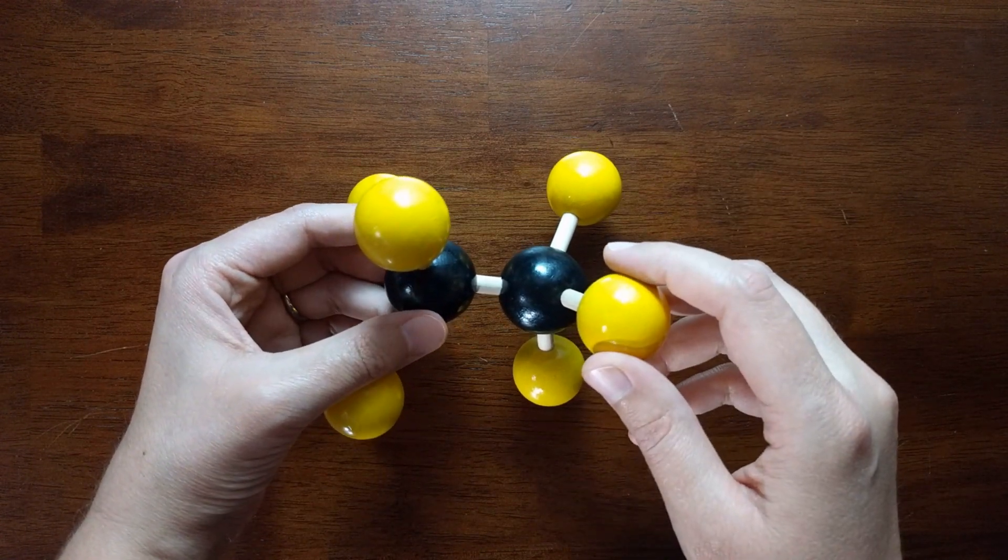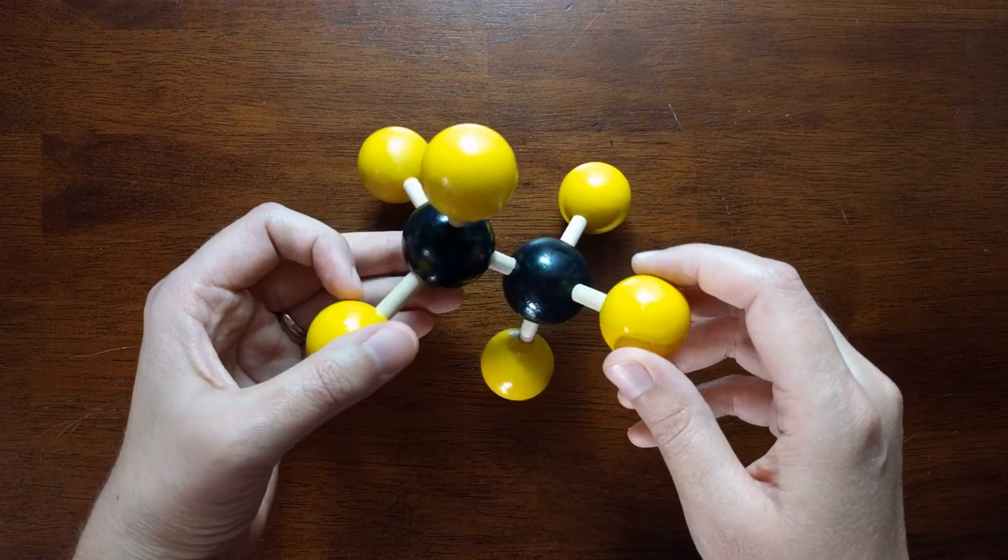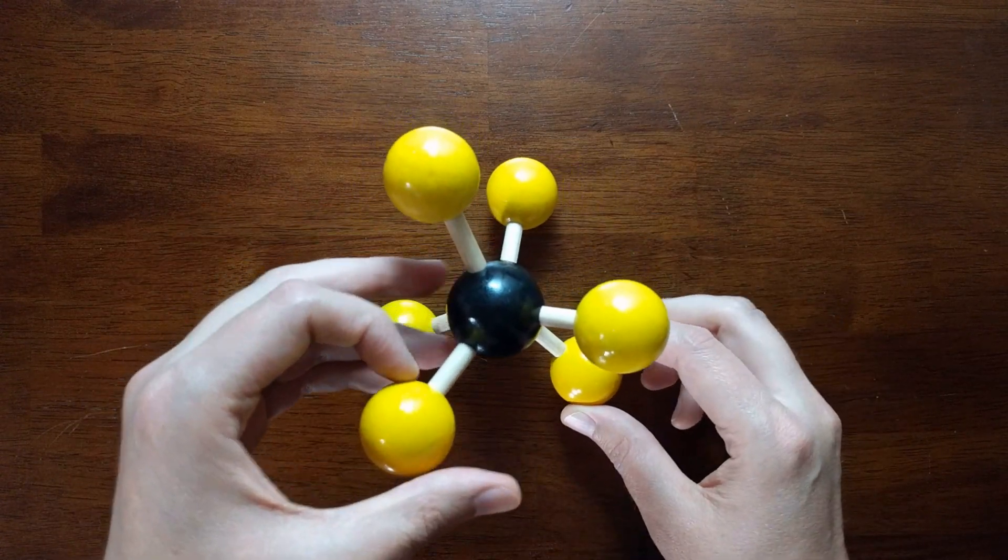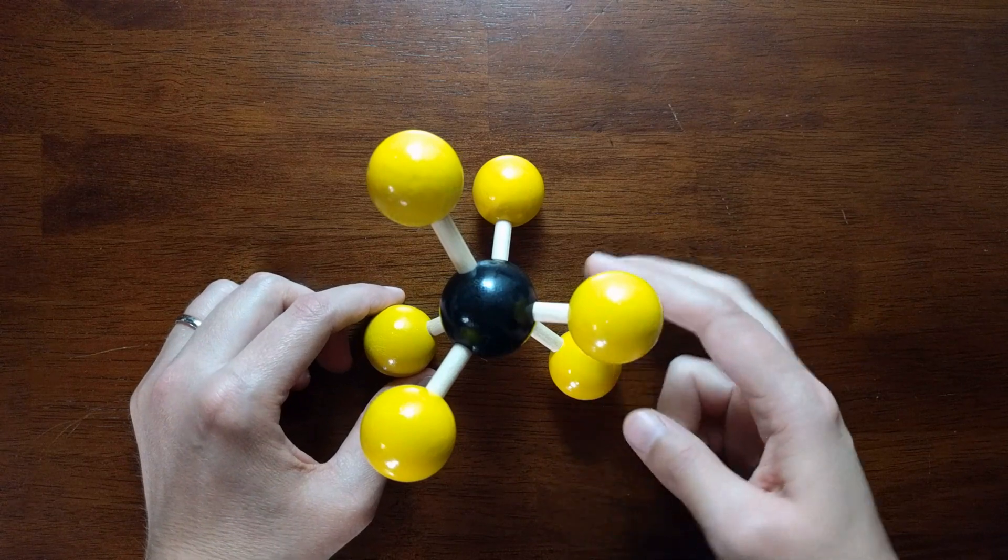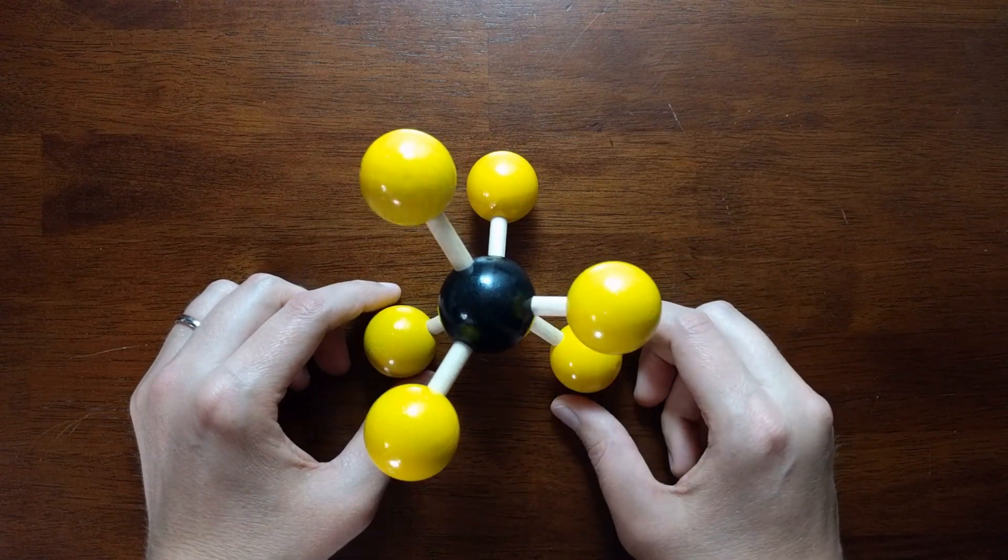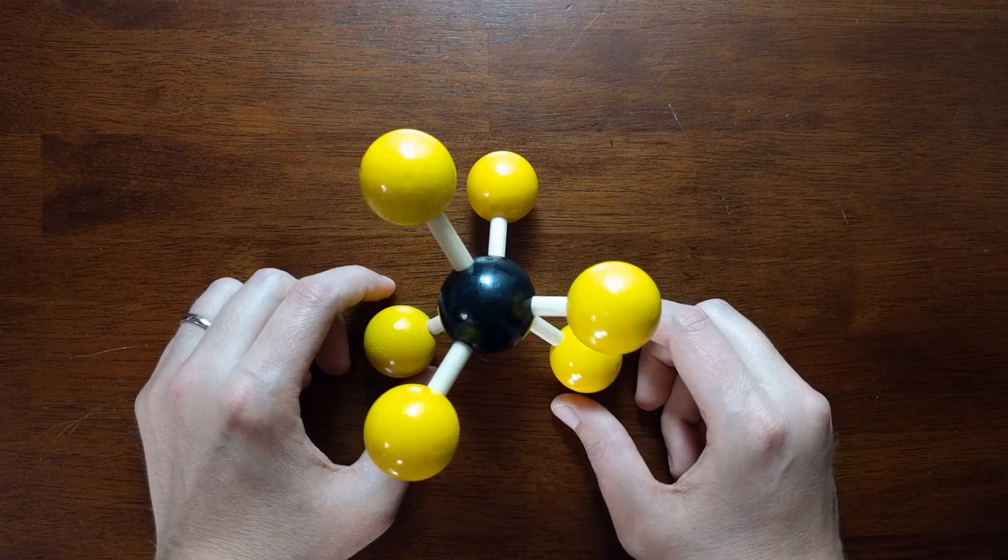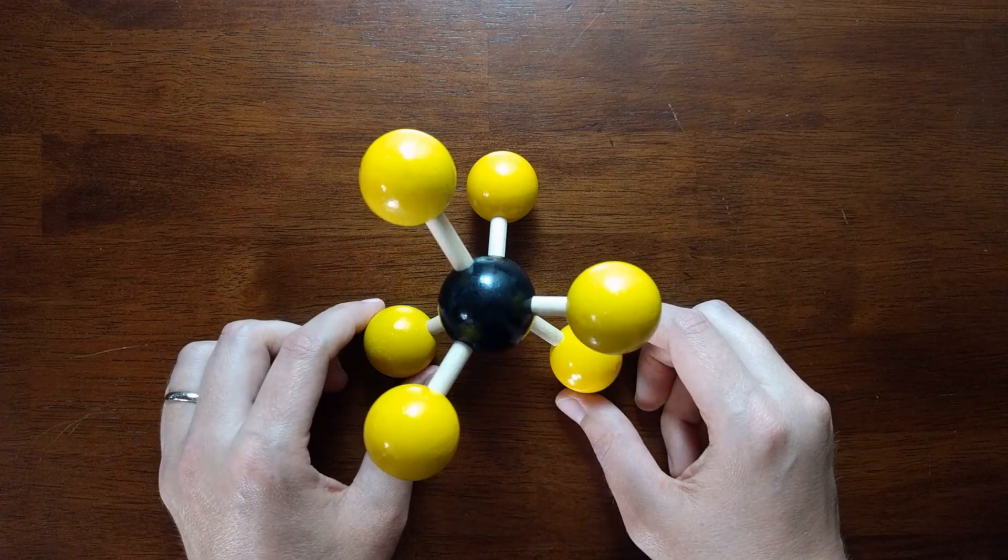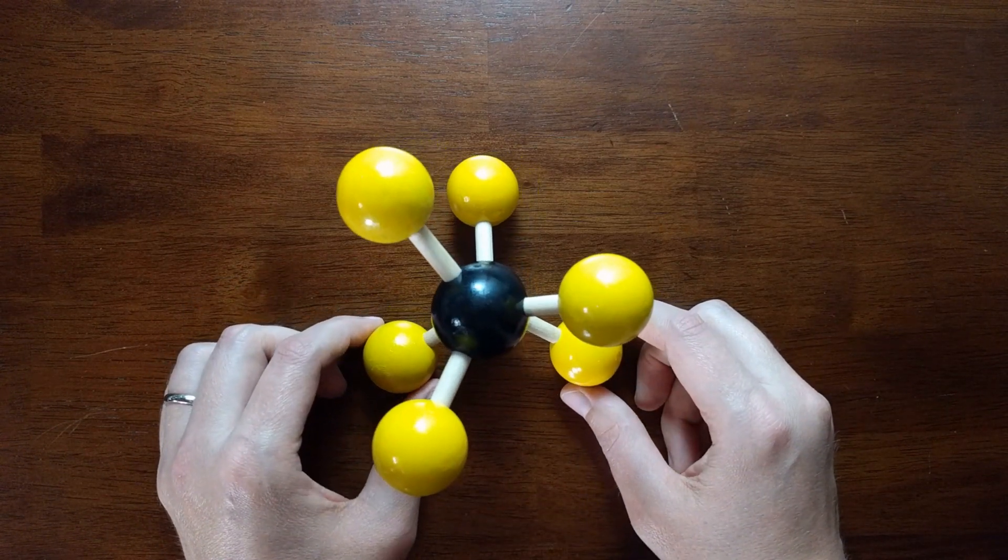An easy way to see these different conformations is to rotate this molecule and line up the two carbons in this carbon-carbon bond that was rotating. Let's just focus on this particular carbon-carbon single bond. You can refer to this bond as a sigma bond.